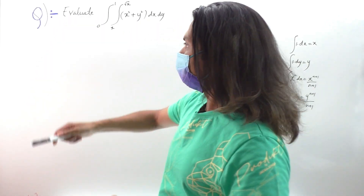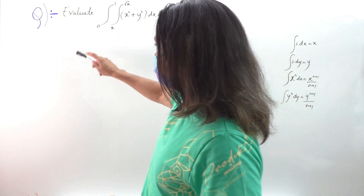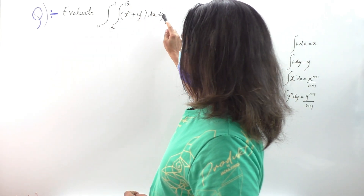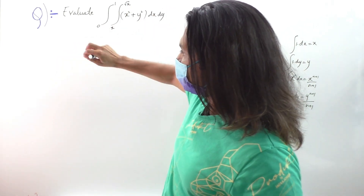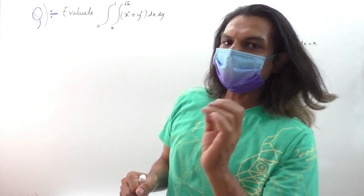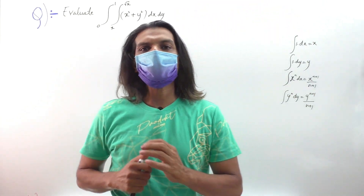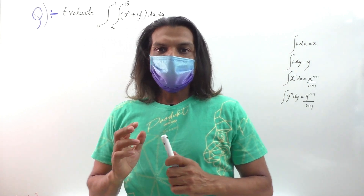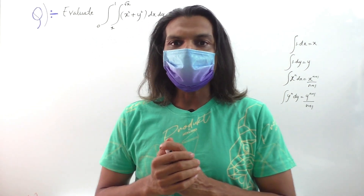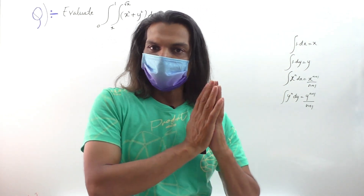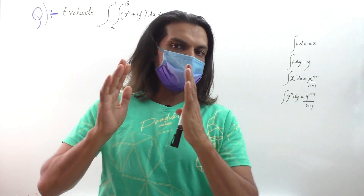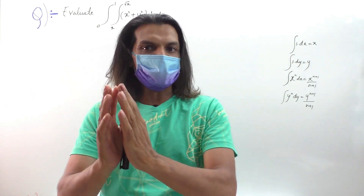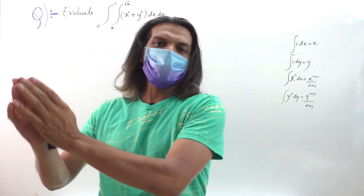Without wasting any time, let's start doing the maths. The first problem: evaluate the integral from 0 to 1, integral from x to √x, of (x² + y²) dy dx. As you can see, there are two integrals here, so it's a problem on double integrals.